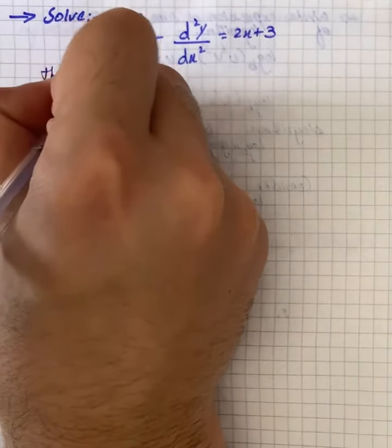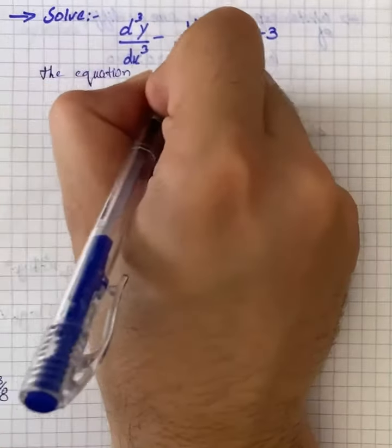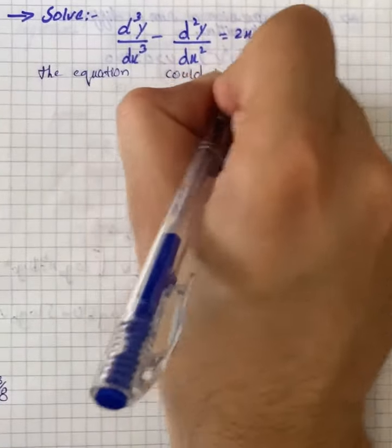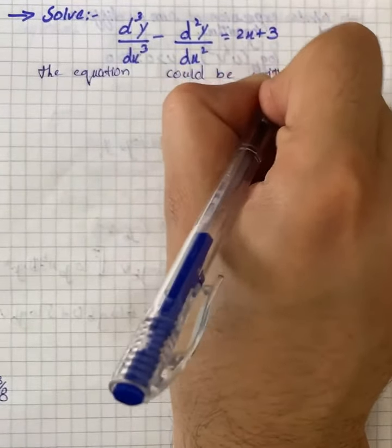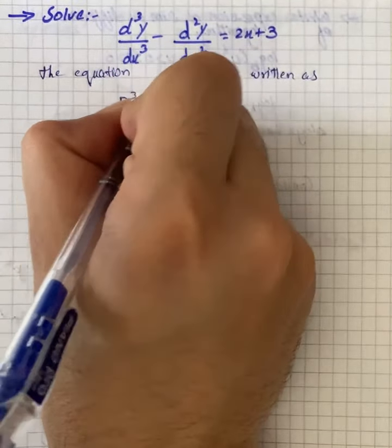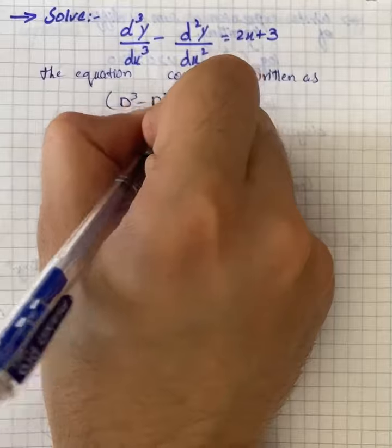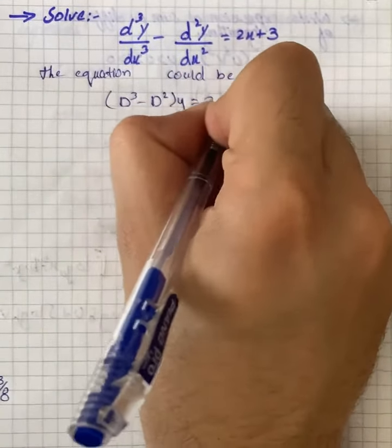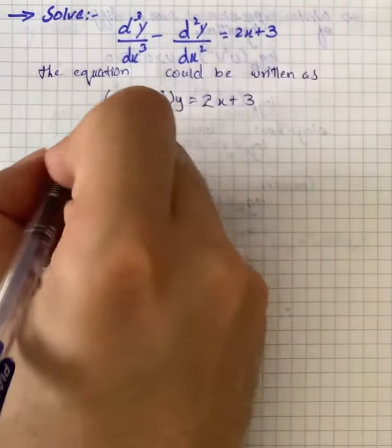The equation could be written as (D³ - D²)y = 2x + 3.